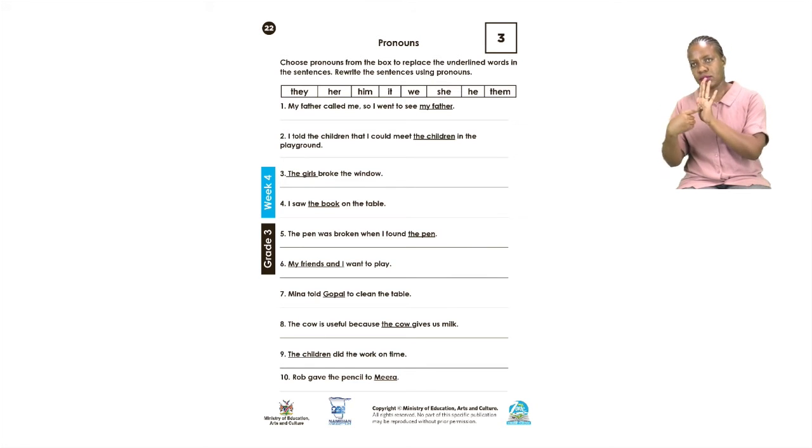Remember to put a capital letter at the beginning of the sentence and a full stop at the end. Let us do number four together. Number four says, I saw the book on the table. The words we are going to replace is the book. Now, remember boys and girls, we said that if it is not a human being, we use the word it. So, we are going to say, I saw it on the table.